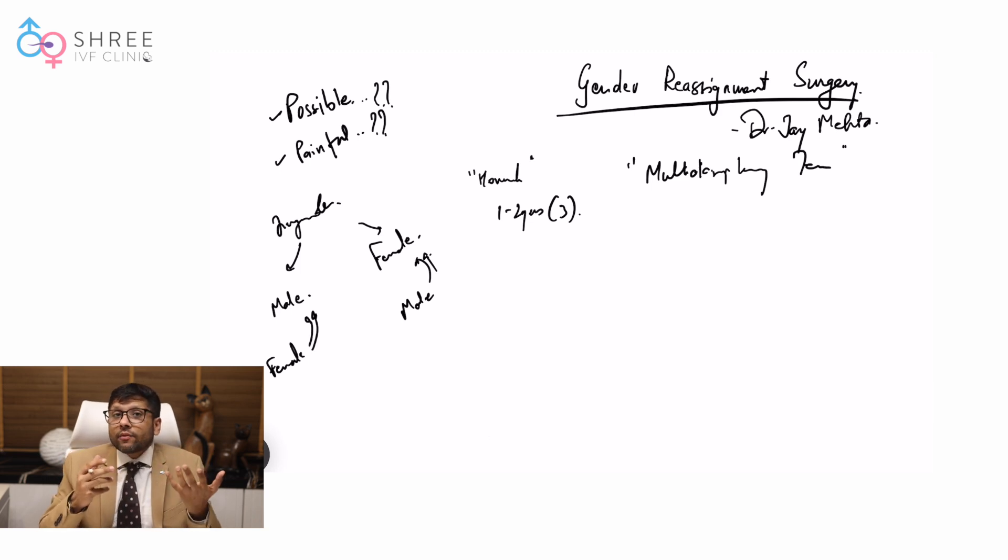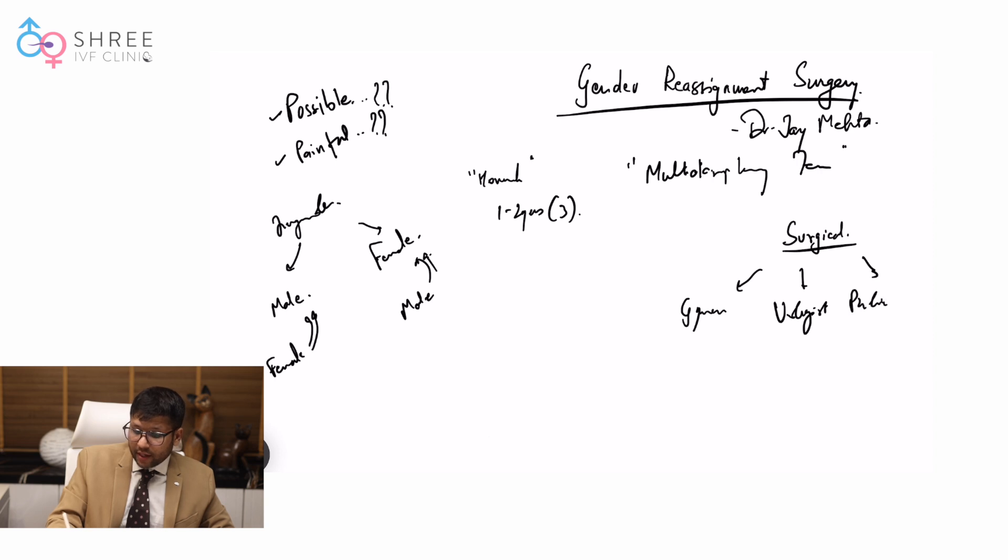There are some people who along with the hormonal changes also desire to have external genital changes, that means physical changes. Now it is the physical changes where the surgical team actually comes into play. The surgical team is commonly going to involve a gynecologist, a urologist, and a plastic surgeon. These three are the core team members of your surgical team.